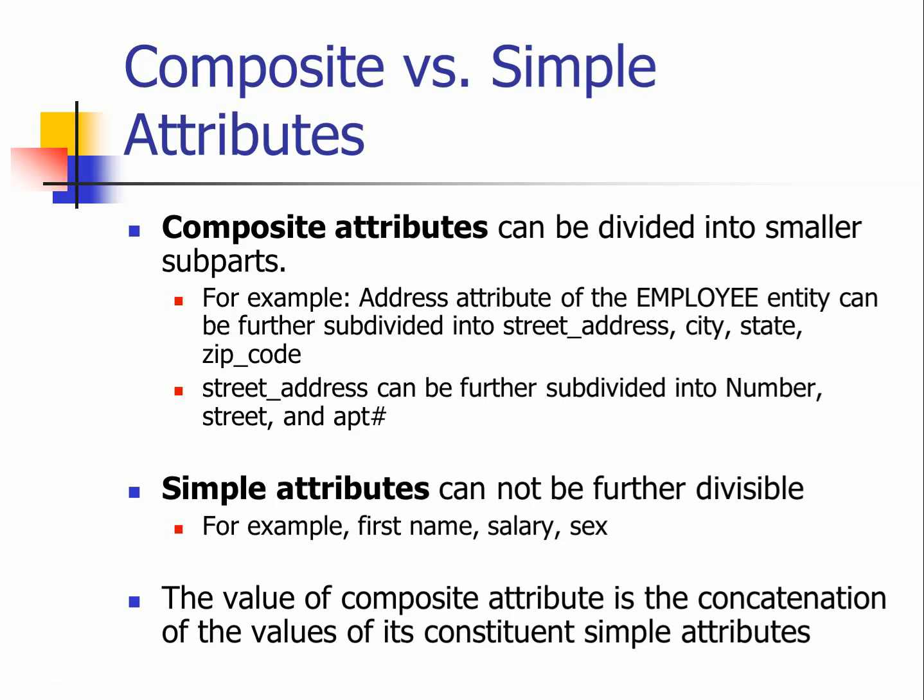Think about this: when you apply for a credit card or go to Amazon to buy something and fill in the address, does it give you one big box for everything, or does it nicely separate everything into smaller parts including street number, street name, city, zip code, and state? They are usually separated, and that is exactly the idea of composite attributes being implemented in real life.